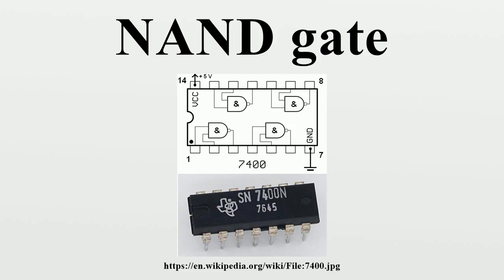Implementations. The NAND gate has the property of functional completeness — that is, any other logic function can be implemented using only NAND gates. An entire processor can be created using NAND gates alone. In TTL ICs using multiple emitter transistors, it also requires fewer transistors than a NOR gate. If no specific NAND gates are available, one can be made from NOR gates, because NAND and NOR gates are considered the universal gates, meaning they can be used to make all the others.